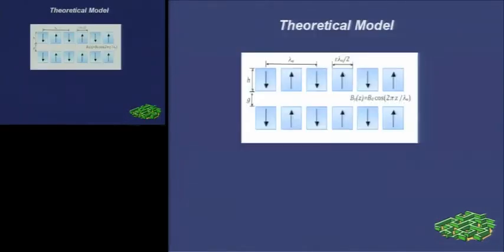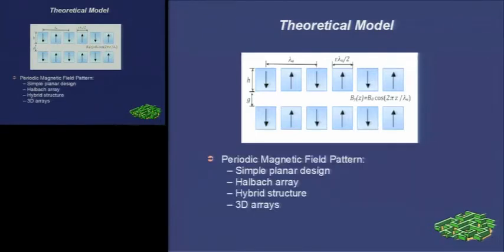Here is the theoretical model of the undulator. As we can see on the picture, it's a simple planar design. Each row of the dipole magnets are in a Halbach 3D array.